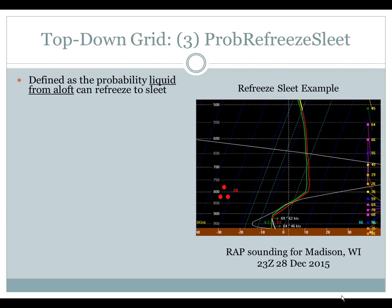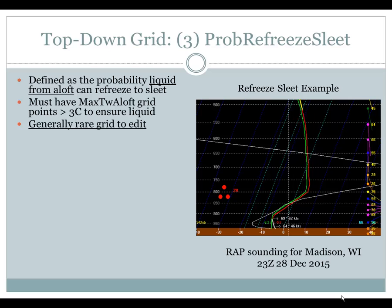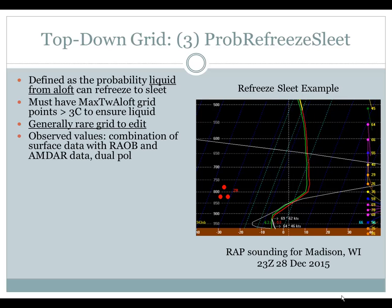The third grid to discuss in the top-down approach is prob refreeze sleet. This is defined as the probability that liquid from aloft can refreeze. An example sounding for refreeze into sleet is shown on the right. You must have a Max Wet Bulb Aloft greater than 3°C to ensure liquid. Generally, this is going to be a rare grid to edit — you may only get one or two cases a year at most. Observed values can come from surface data combined with RAOB and AMDAR data, as well as dual-pol — you may see a double ring in your CC.